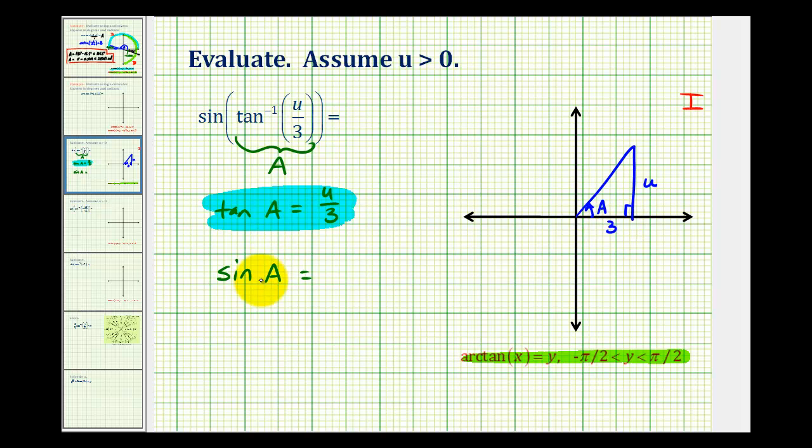And now notice, to determine the sine of angle A, we need to determine the length of this hypotenuse, which we can do using the Pythagorean Theorem.